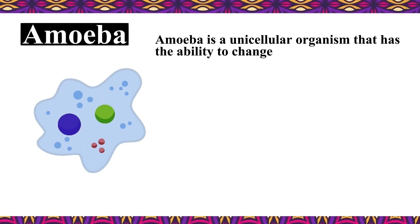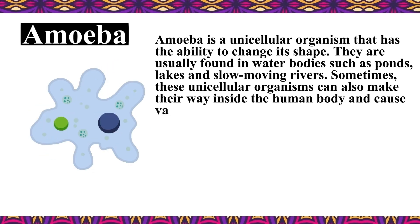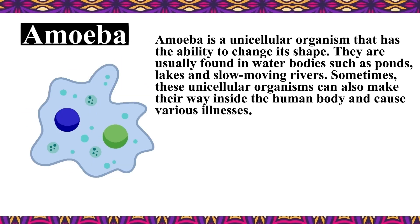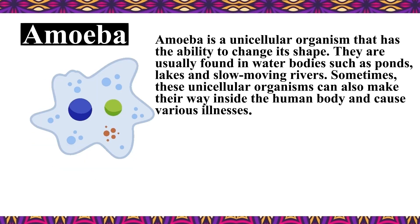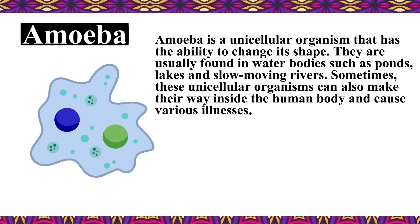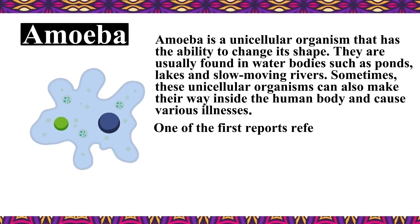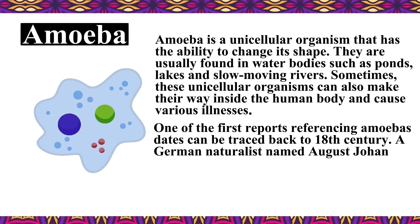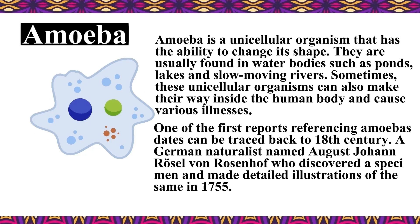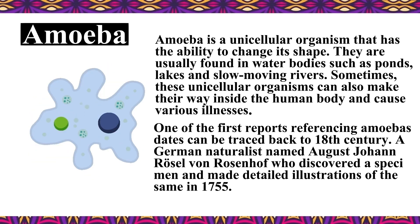Amoeba is a unicellular organism that has the ability to change its shape. They are usually found in water bodies such as ponds, lakes, and slow-moving rivers. Sometimes these unicellular organisms can also make their way inside the human body and cause various illnesses. One of the first reports referencing amoeba dates back to the 18th century — a German naturalist named August Johann Rosa von Rosenhoff, who discovered a specimen and made detailed illustrations of it in 1755.